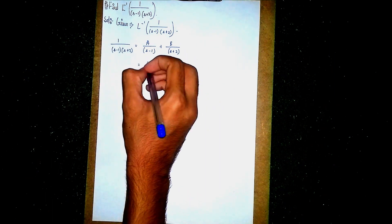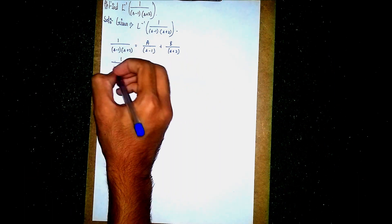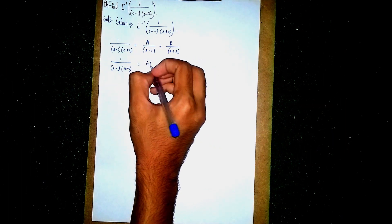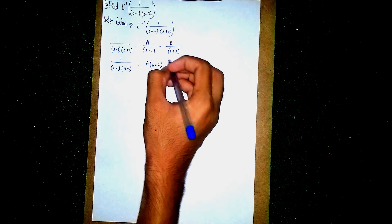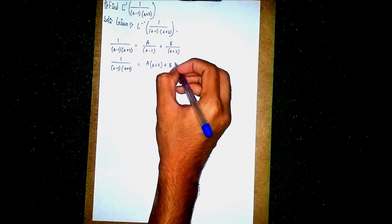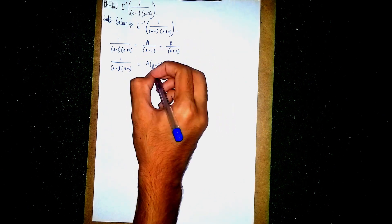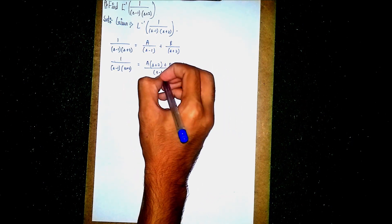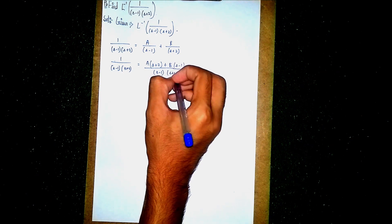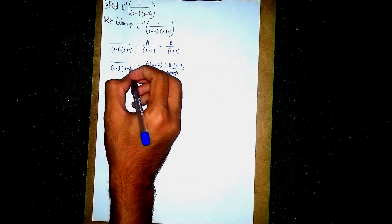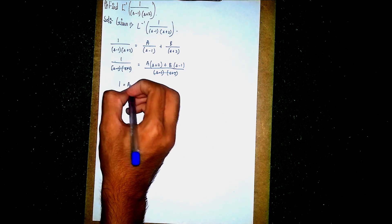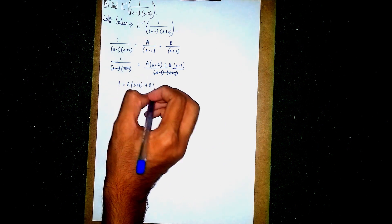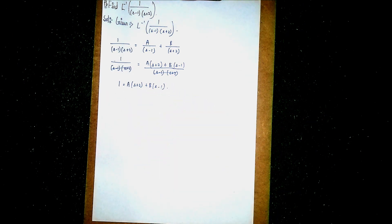After cross multiplying, we get A into (s plus 2) plus B into (s minus 1), all over (s minus 1) into (s plus 2). The denominators cancel, leaving: 1 is equal to A into (s plus 2) plus B into (s minus 1). Call this equation 1.